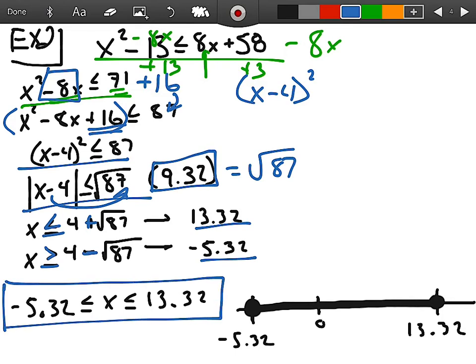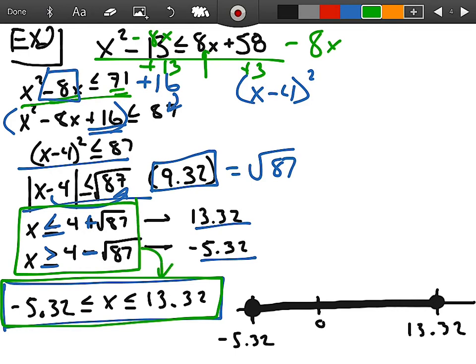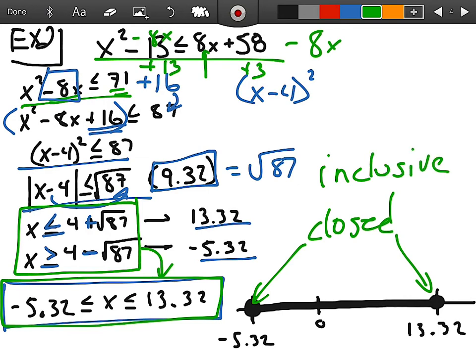And then, what happens here in the green is that I've combined these two equations here into one compound inequality. Notice the closed points at the line. That means it is inclusive. And why is it inclusive? Because we've been greater than and less than or equal to.